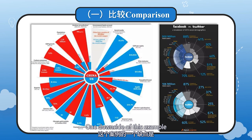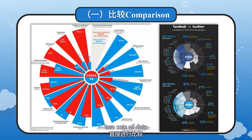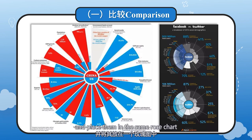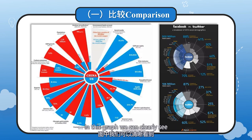One downside of this example is the difficulty in directly comparing two sets of data. To improve this, some users represent different data series with different colors and place them in the same Rose chart. In this graph, we can clearly see how two superpowers compare.